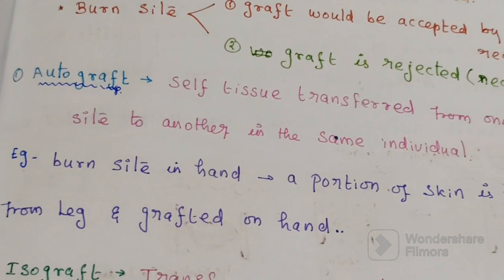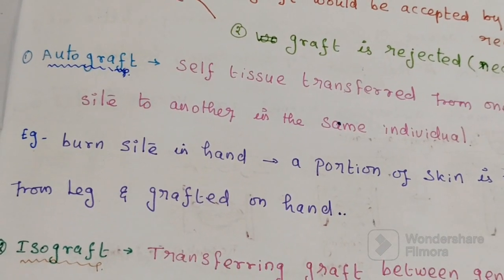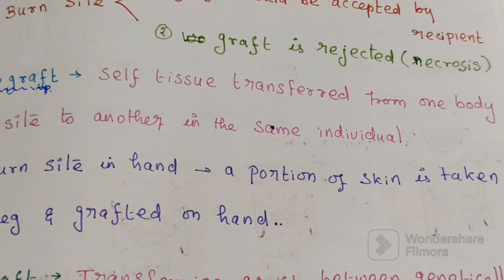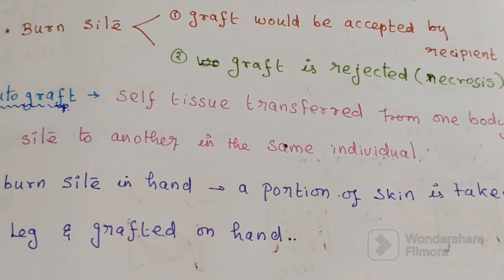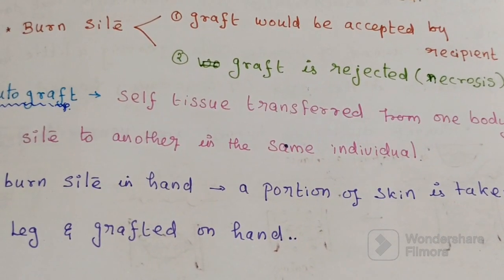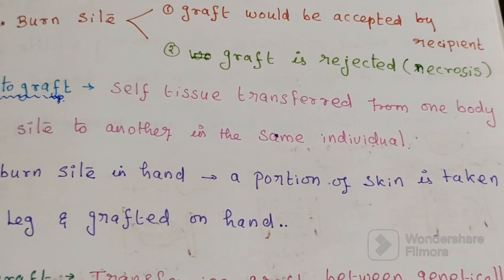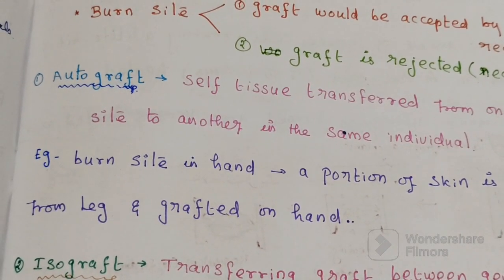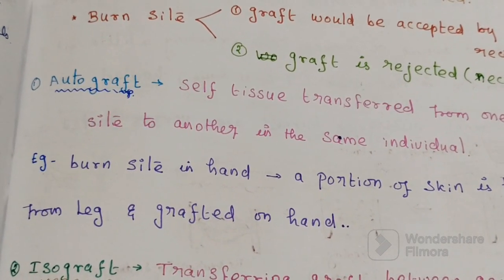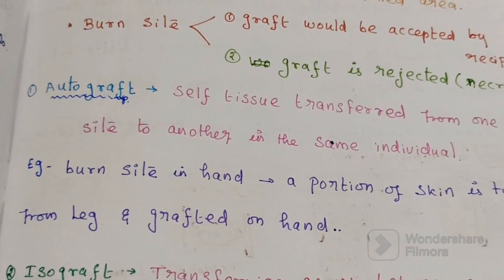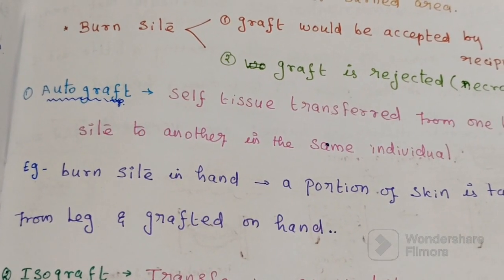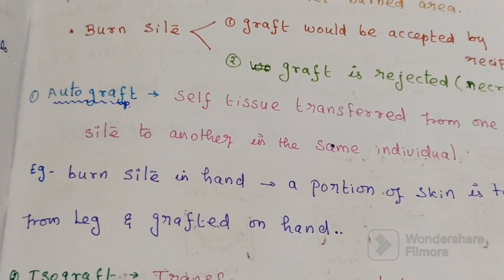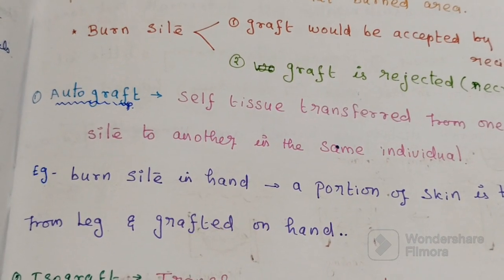The first term is autograft. An autograft is self-tissue transferred from one body location to another body location in the same individual. For example, if you have a burn site on your hands, a portion of skin is taken from your leg and grafted onto your hand. This kind of situation is an example of an autograft.